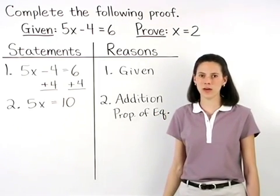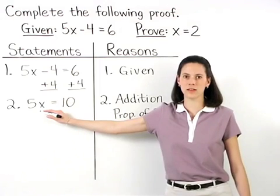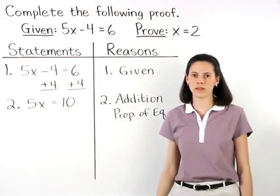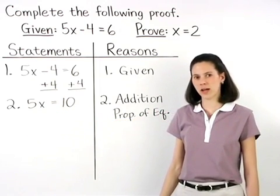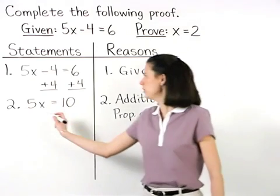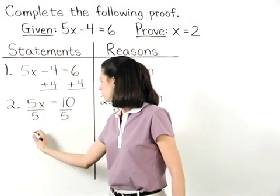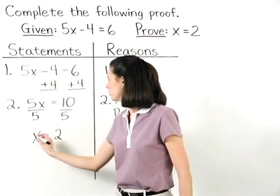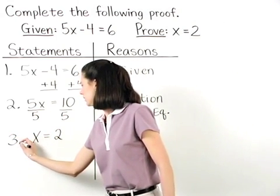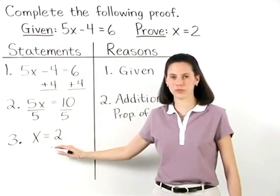Since we now have 5x equals 10, our next step in solving the equation is to divide both sides of the equation by 5 to get x equals 2. So statement 3 is x equals 2.